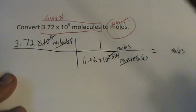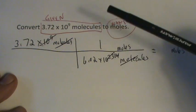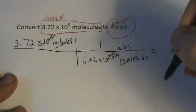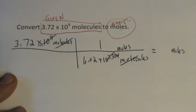If you do it in your calculator, just put 10 to the ninth divided by 6.02 times 10 to the 23rd, you'll come up with an answer. But if you don't have that calculator, you can cancel those out.